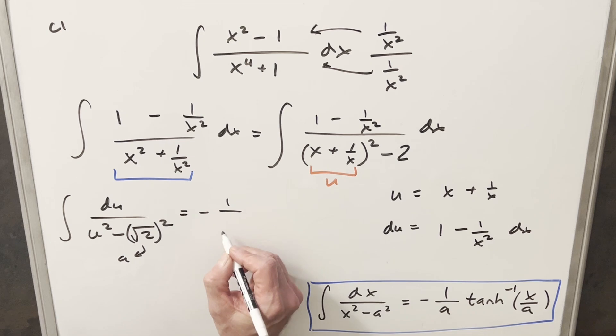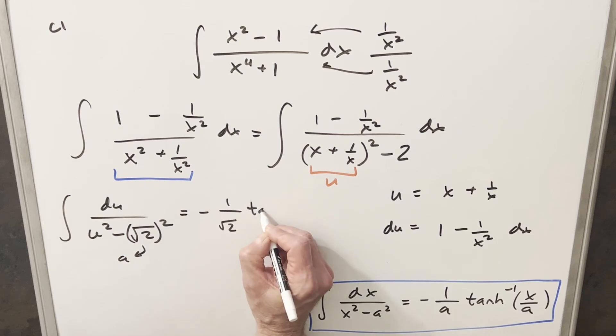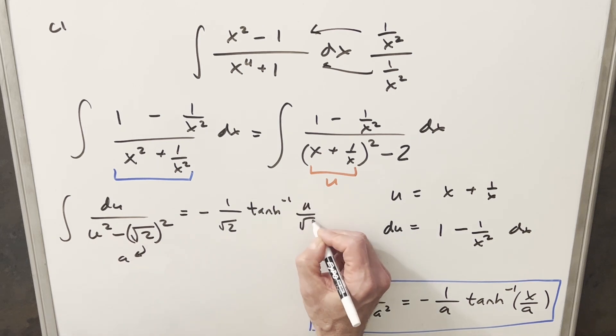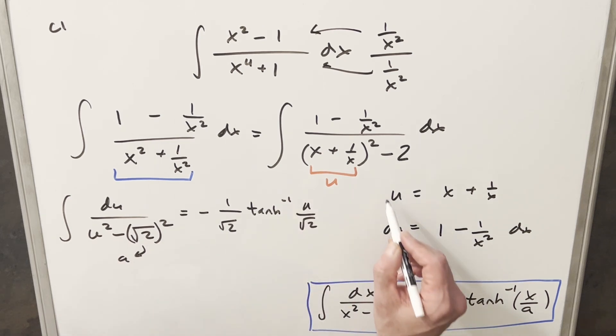minus 1 over square root of 2. And then our x is going to be u over the square root of 2 here. So we're just going to need to back substitute in order to finish this thing off.